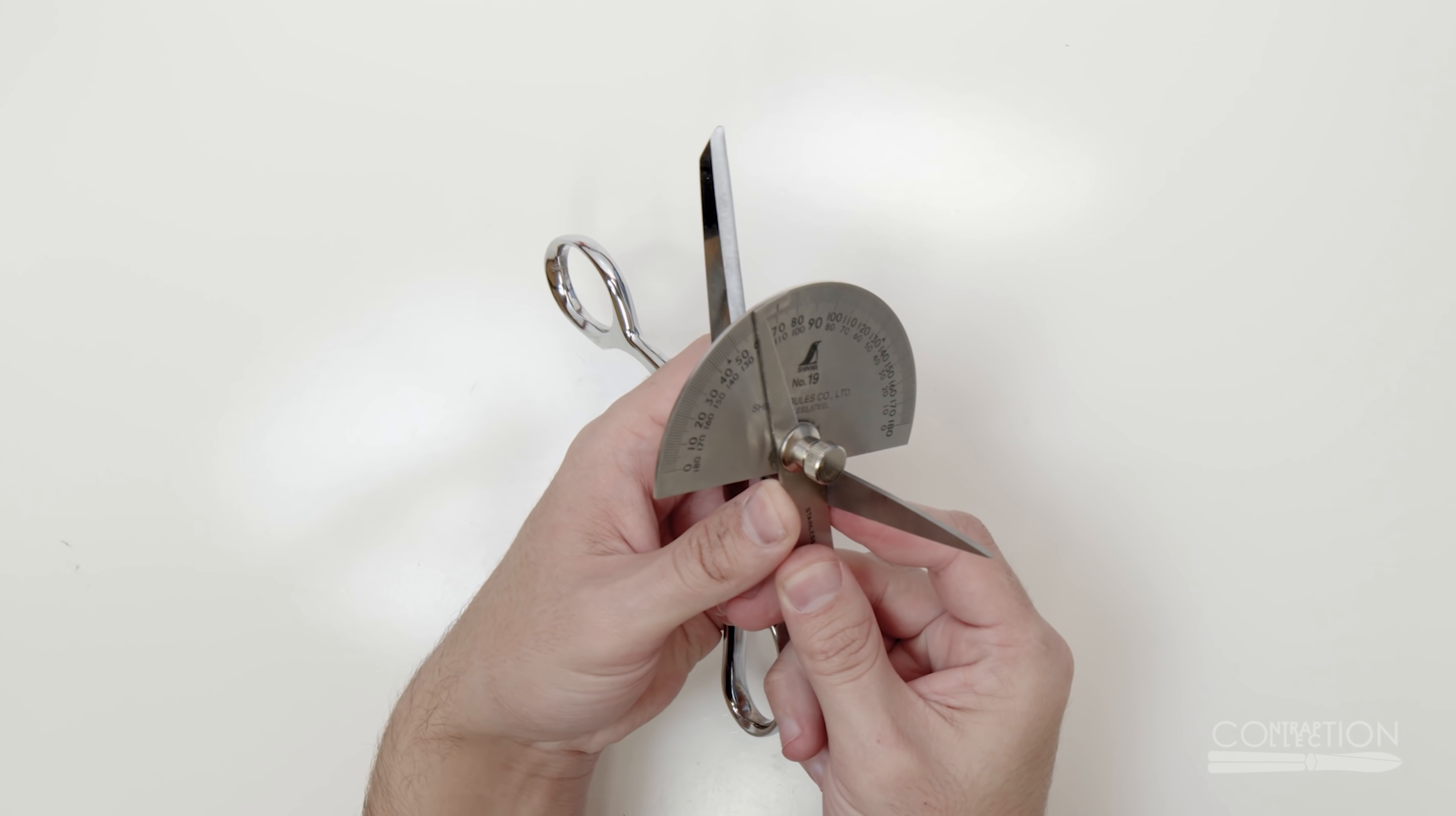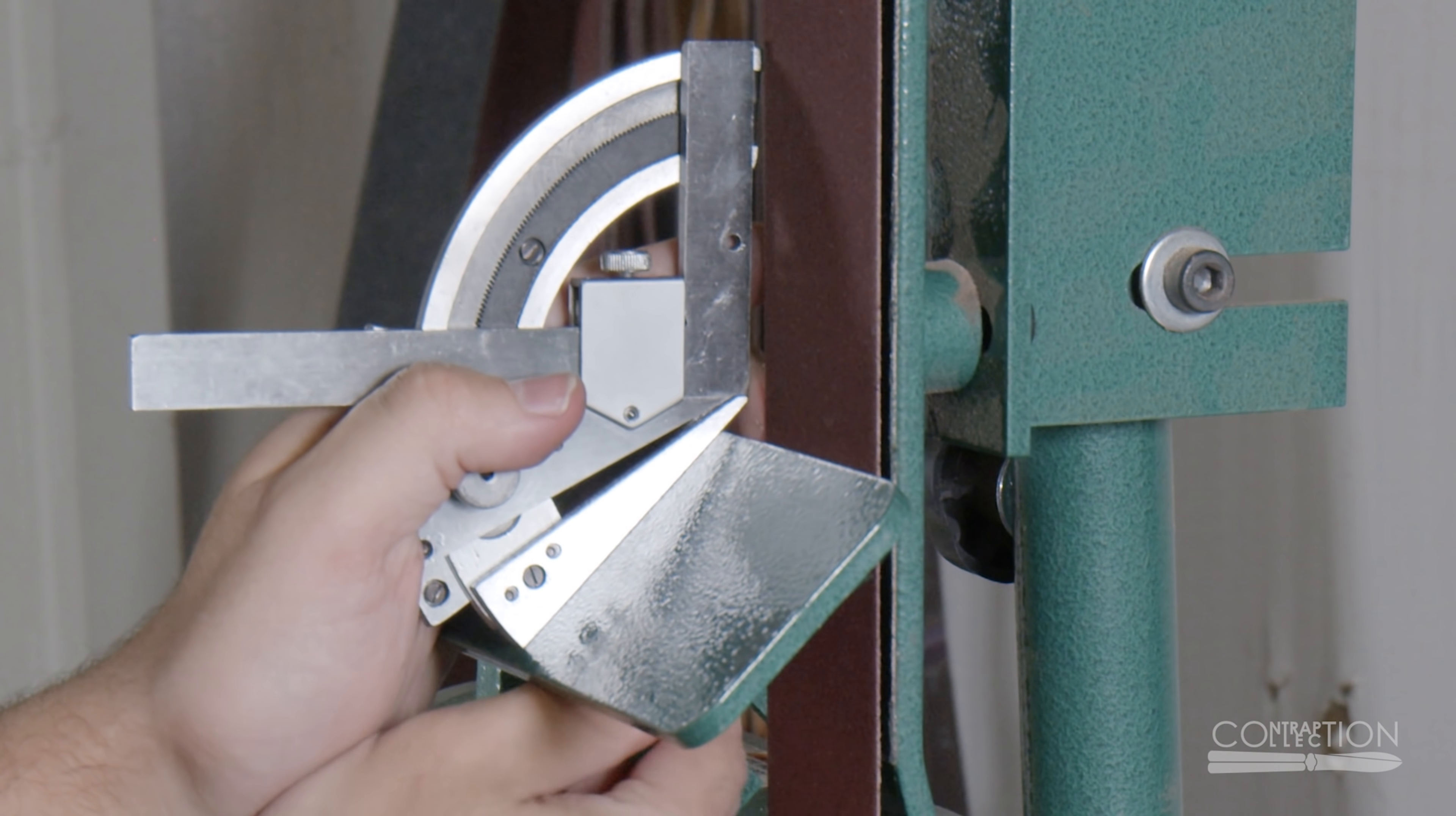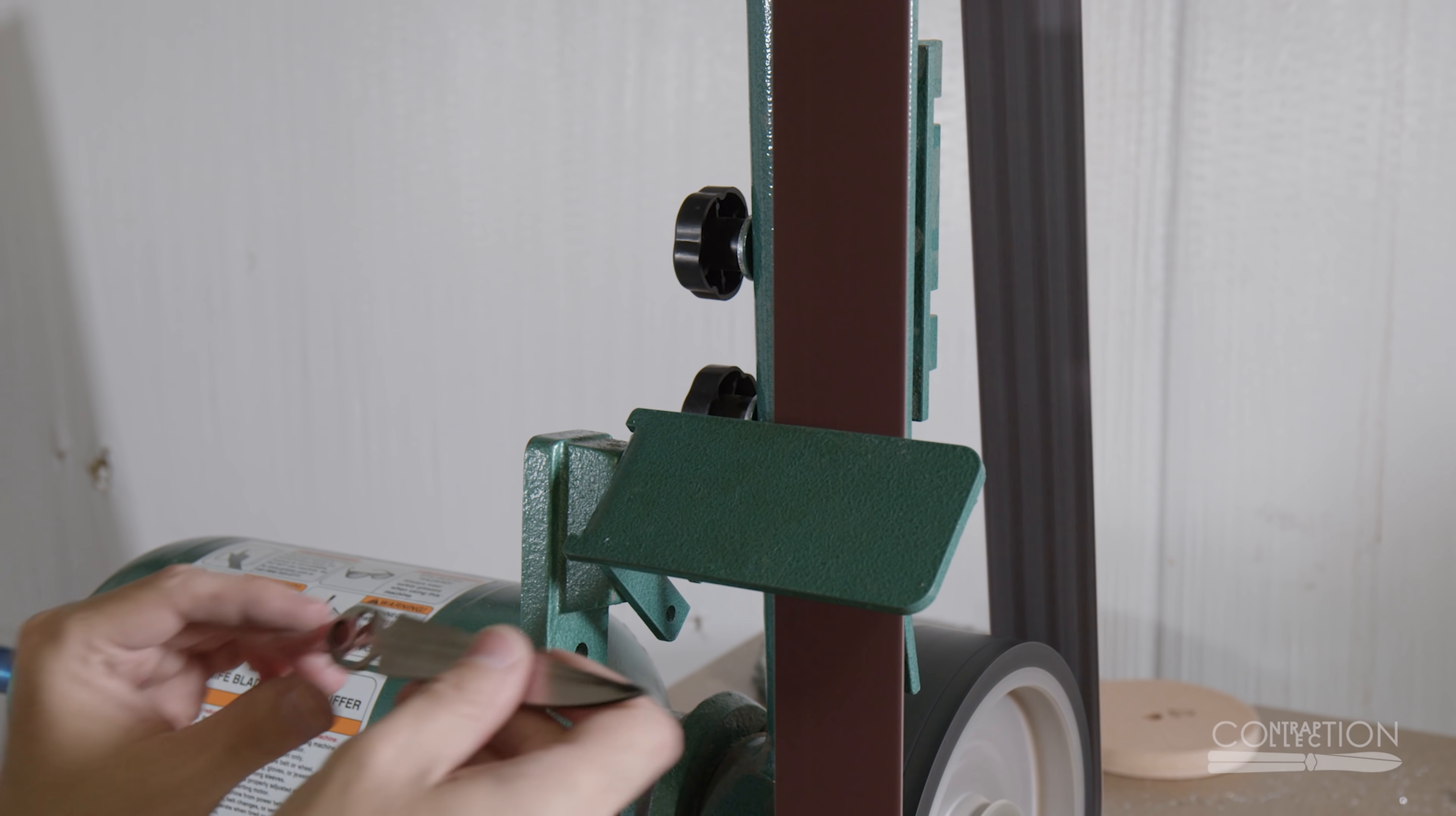I think I need a fairly steep angle for scissors. These scissors are like 70 degrees on one blade, and 45 on the other. I thought maybe 45 degrees would be a good middle ground to start at. The platen on this grinder isn't very good for this. Or, maybe in general.